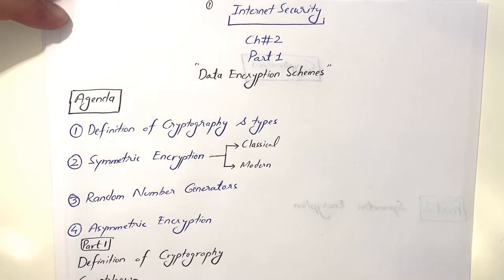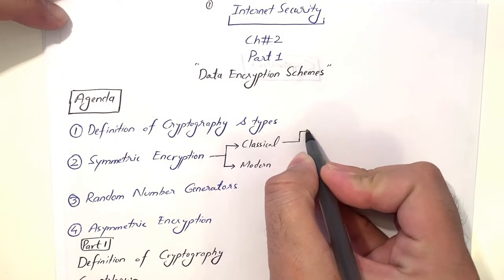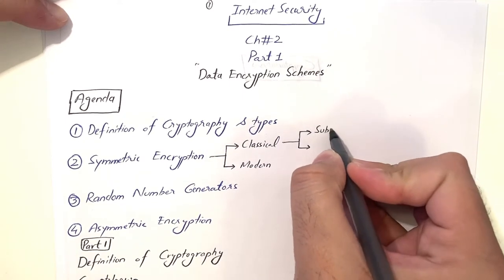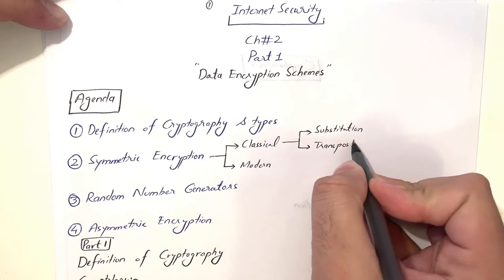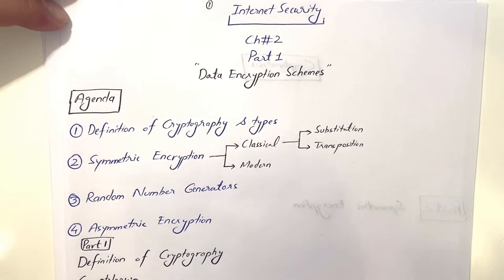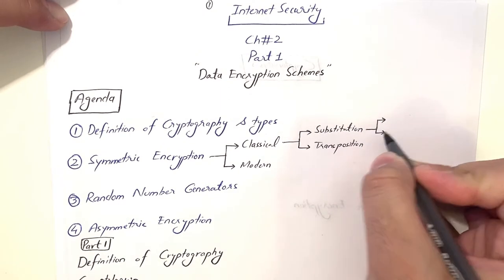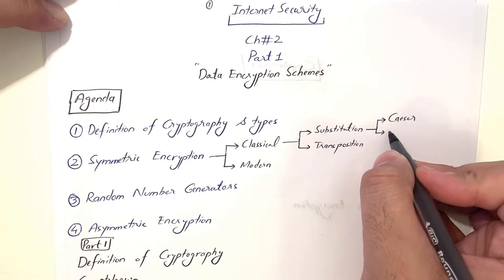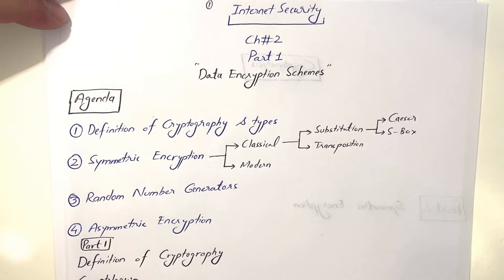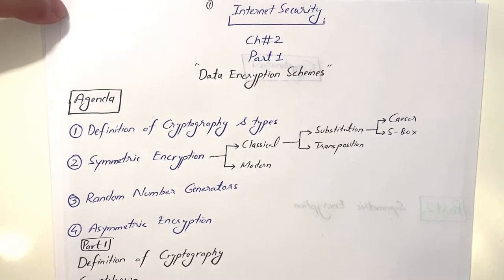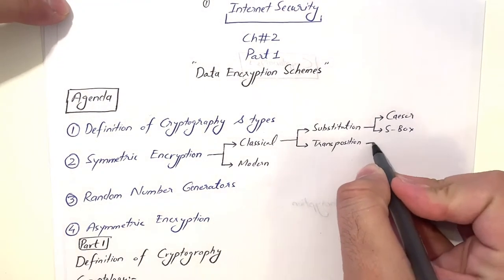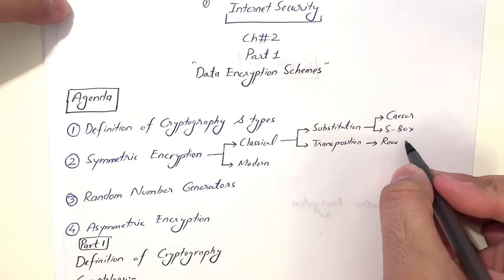In classical techniques, we will focus on two main types of encryption schemes: substitution cipher and transposition cipher. In substitution, we will discuss two types: the Caesar cipher, and substitution boxes (S-boxes). S-boxes are very important because they are used in modern algorithms like DES, AES, Triple DES, IDEA, Blowfish, and RC cipher algorithms.